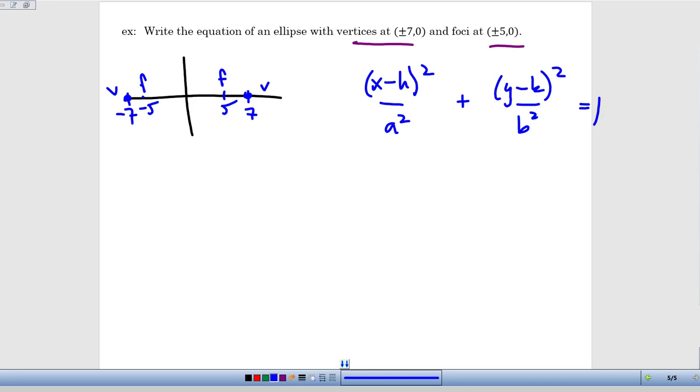The things I need to figure out are h and k, which are the coordinates of the center. I need to know what a is and I need to know what b is. A lot of that information is already given to me or I can infer it from what we've done just with the graph that we sketched out so far.